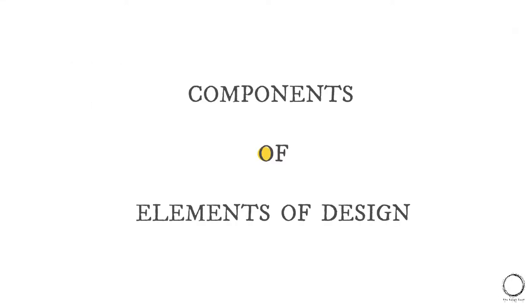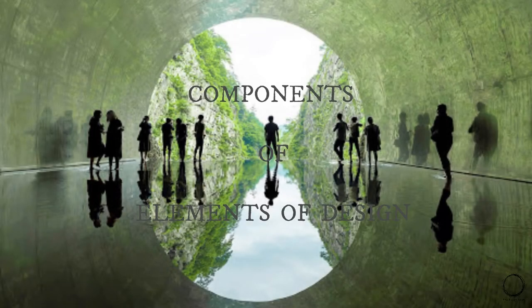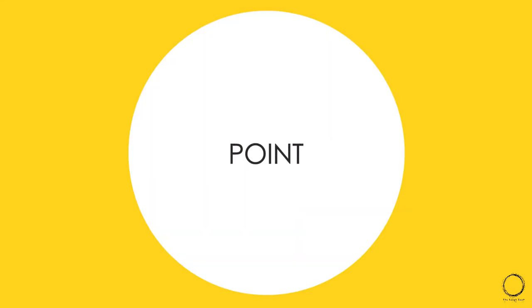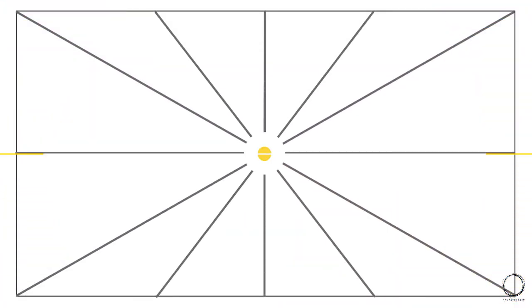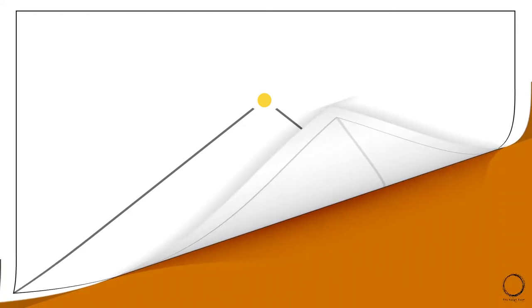These components have their characteristics linked with nature and then applied through architecture. Starting with point: a point indicates a position in space and has no dimension. A point can serve to mark the two ends of a line, the intersection of two lines, the meeting of lines at the corner of a plane or volume, or the center of a field.